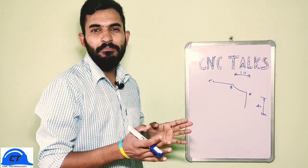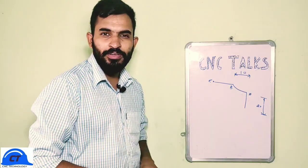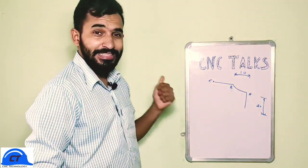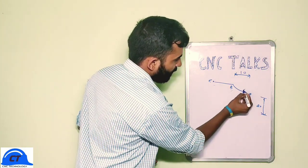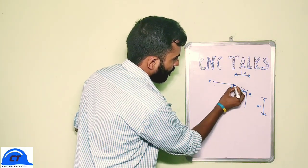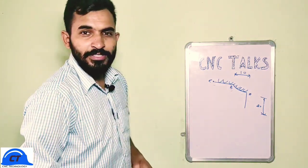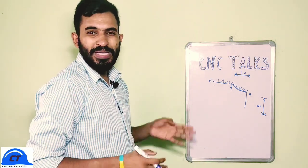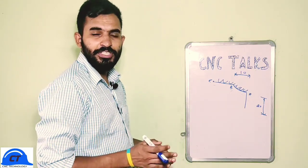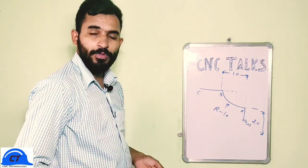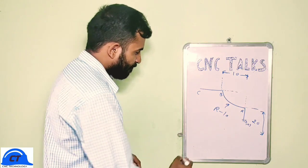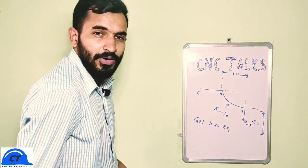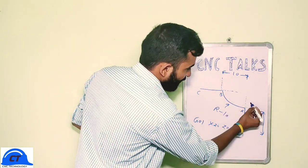Let's consider a cylindrical bar and we need to make a certain shape out of it. Points A, B and C follow our tool path, and to make this exact tool path we need to move our tool precisely. To reach point A we give G01, X20 and Z0, so our tool will reach point A. The zero point coincides with the offset point, and X20 is the 20mm distance along the X axis.